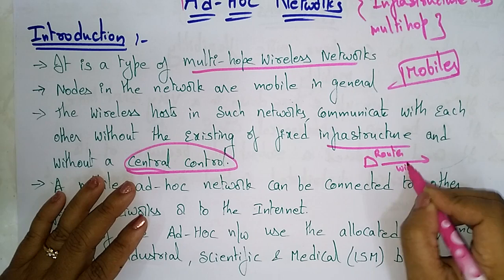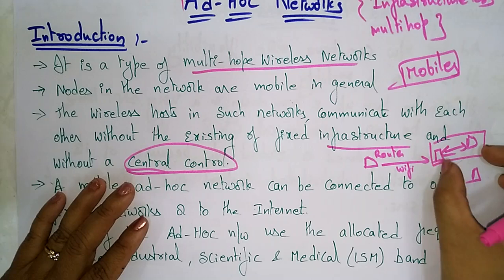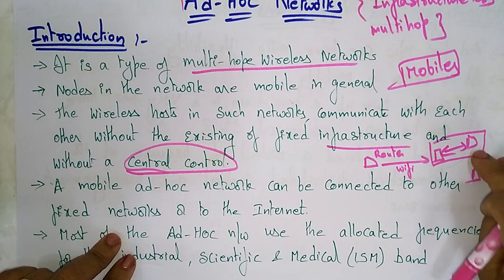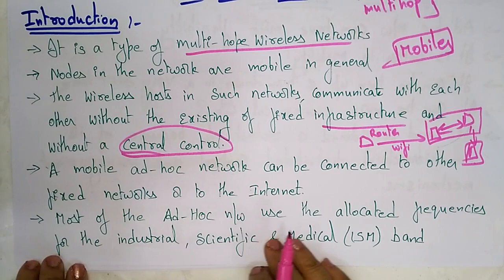For example, consider this router from which you are getting Wi-Fi signals. One device is here, another device is here — if you want these two devices to communicate, they can do so directly. A mobile ad hoc network can be connected to a fixed network or to the internet. Most ad hoc networks use allocated frequencies for the industrial, scientific, and medical bands.